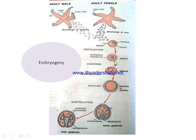Therefore, this membrane protects or acts as a barrier for polyspermy. Polyspermy is the fusion of the ovum with more than one sperm. So in this case, only one sperm can fertilize the ovum. After the formation of the zygote, cleavage starts and by the second day the blastula is formed.